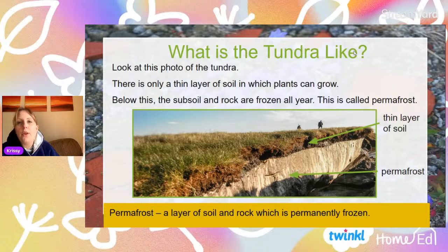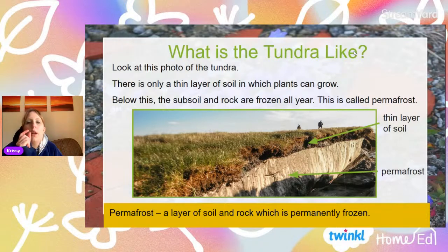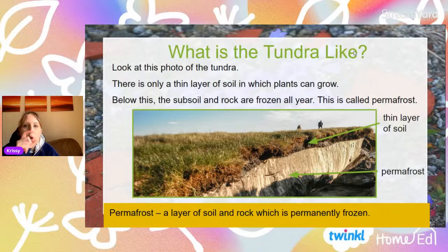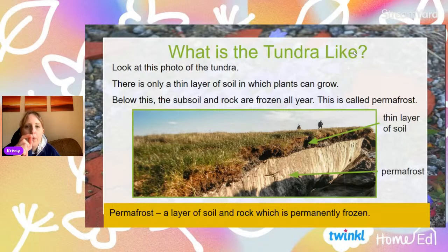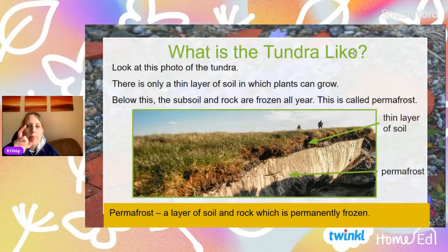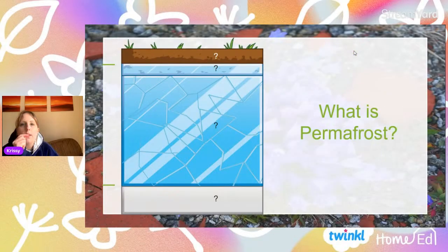There's only this really thin layer of soil where plants can grow. Below this you have the subsoil and the rock, and the subsoil and rock are frozen all year round. This is called permafrost — you sometimes hear this word. It basically means the soil and rock which is permanently frozen. Due to the temperatures all year round, you have this permafrost in the tundra, and it's only this really thin layer of soil where plants can grow.